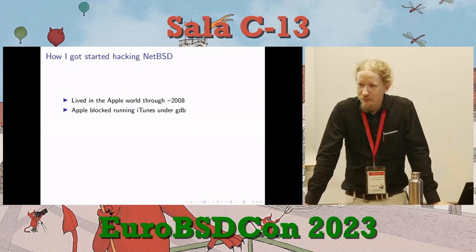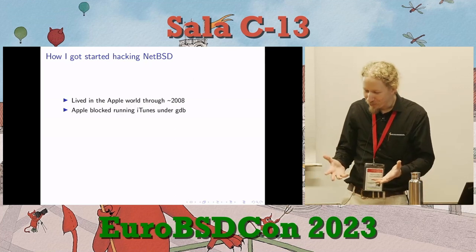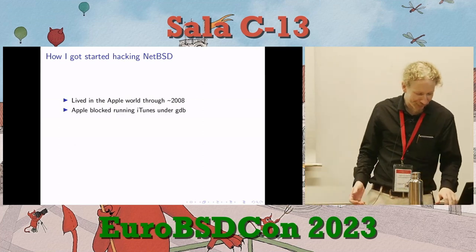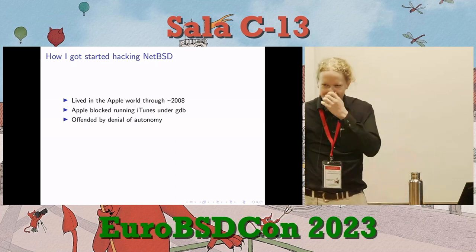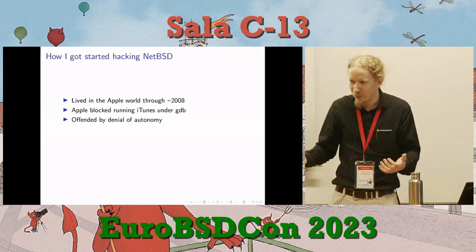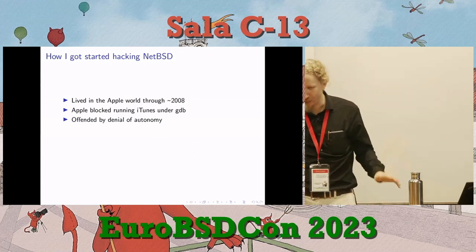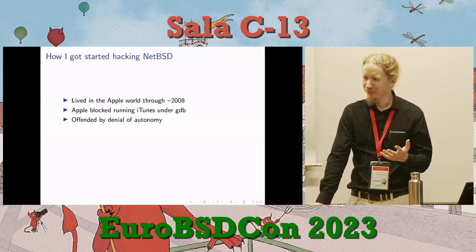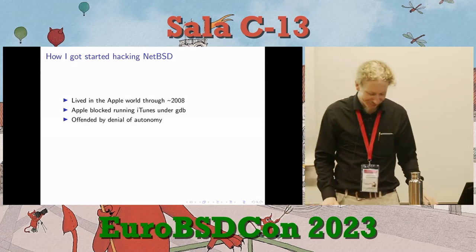Around 2007 or 2008, Apple decided you shouldn't be allowed to run iTunes under a debugger. I thought: this is my own computer — I'm the one who should be in charge of what software gets to run on it, not Apple. I was offended by this denial of autonomy. It's a general purpose computer, it's a Turing machine — it can do whatever computation you want. I'm sure someone has figured out a workaround to let you run iTunes under GDB, but Apple did forbid running iTunes under GDB.